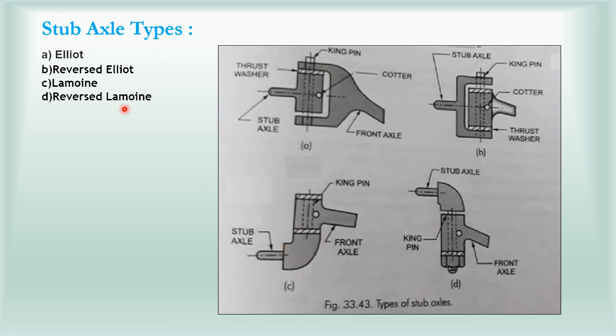The opposite is Reversed Lamoine. This is the front axle. The front axle is fixed on the upside. This is the L-shape. These are four types and constructions. You can see in the exam, you can draw these types from the figure with explanation.